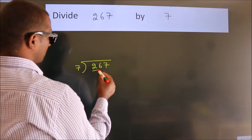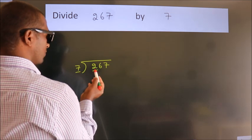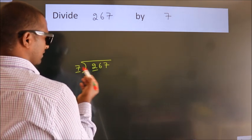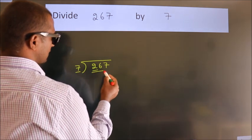Next, here we have 2. Here 7. 2 is smaller than 7. So, we should take 2 numbers. 26.